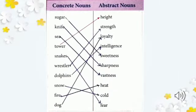Let's do this exercise: Sugar (چینی) is sweet, so match sugar with 'sweetness' (مٹھاس). Knife (چھری) is sharp, so match knife with 'sharpness.' Sea (سمندر) is vast, so match it with 'vastness' (کشادگی). Snakes — we are afraid of them, so match snakes with 'fear.' Wrestler (ریسلر) is strong, so match wrestler with 'strength' (طاقت).